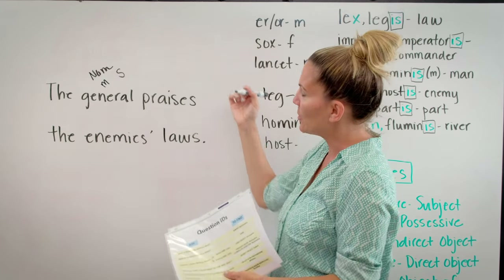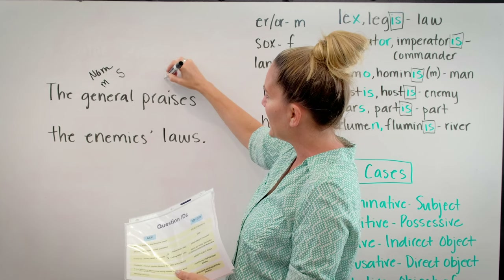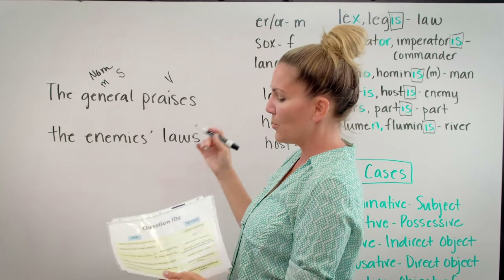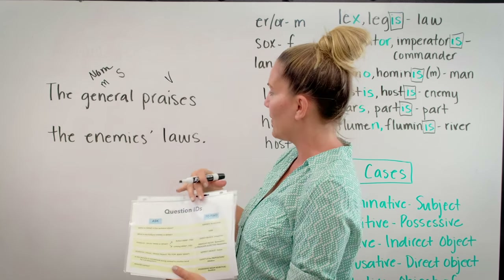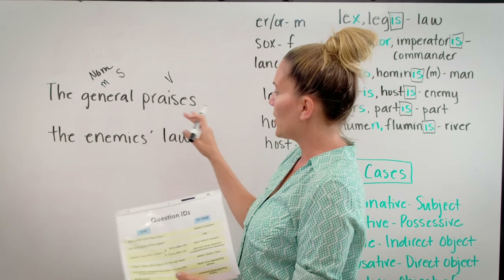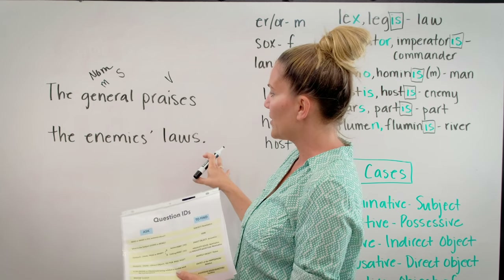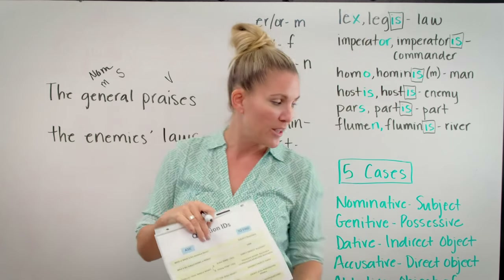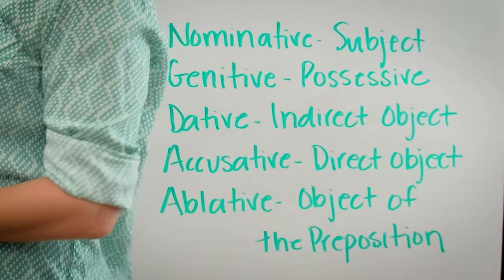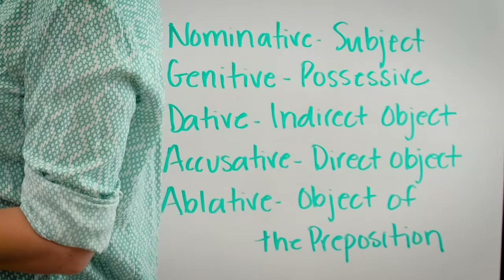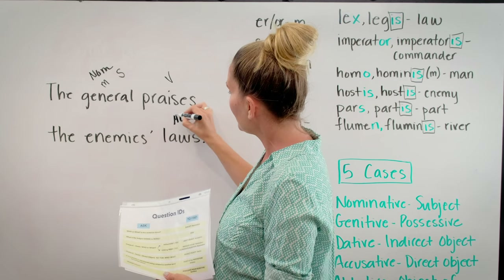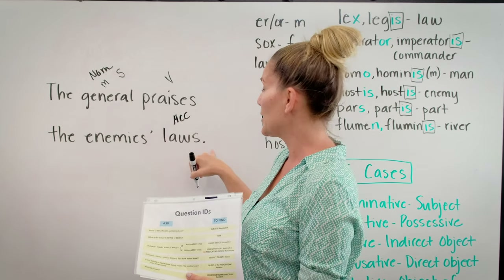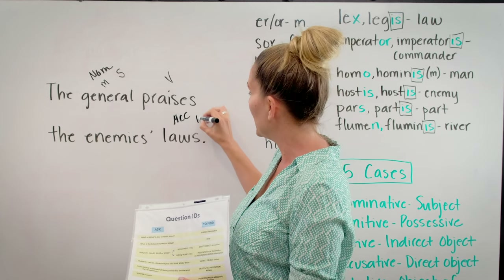What is the general doing or being? He's praising — there's my verb. The general praises who or what? That's my next question. Do I have a direct object? The general praises what? The laws. So here's my direct object, which is the accusative case. Is the word 'laws' singular or plural? It's plural — more than one law.